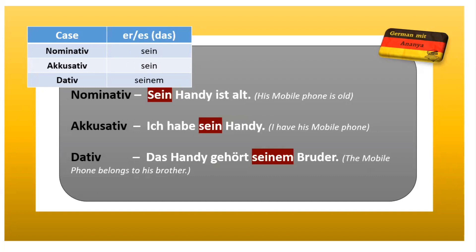Next, 'er' und 'es'. Nominative will be 'sein', accusative 'sein', dative 'seinem'. So my sentences are: 'Sein Handy ist alt' — his mobile phone is old. 'Ich habe sein Handy' — I have his mobile phone. 'Das Handy gehört seinem Bruder' — the mobile phone belongs to his brother. So: sein, sein, seinem — nominative and accusative same, dative changes because the article is 'dem'.